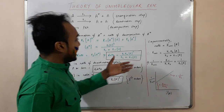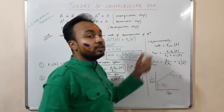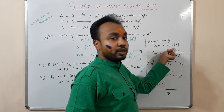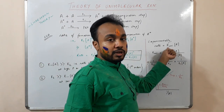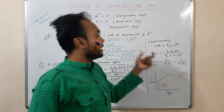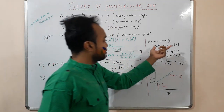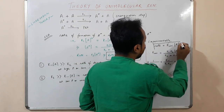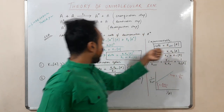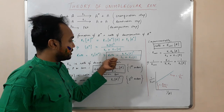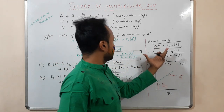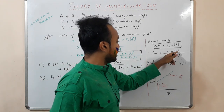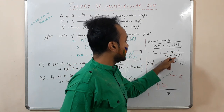Experimentally, for a unimolecular reaction the rate is given as K_uni times [A], where K_uni is the unimolecular rate constant. Comparing this with our theoretical rate, we get K_uni equal to K₁K₂[A] divided by (K₂ + K₋₁[A]). Numericals come from this formula.